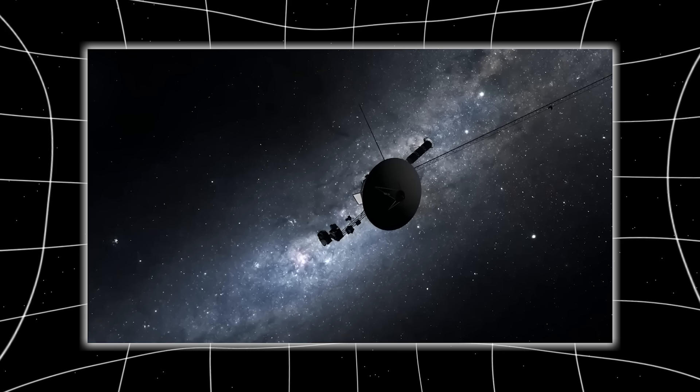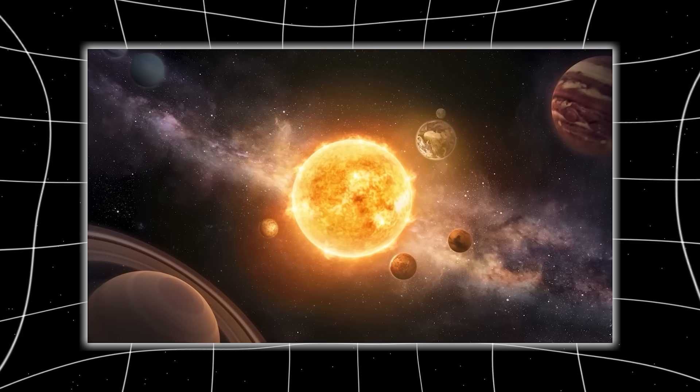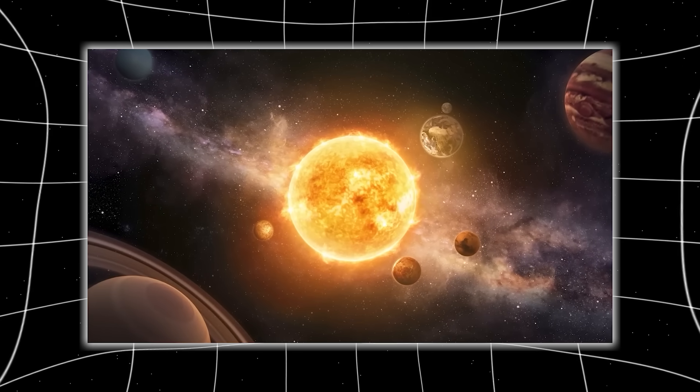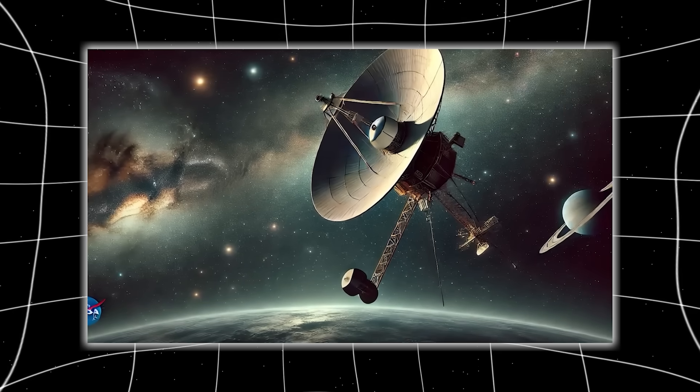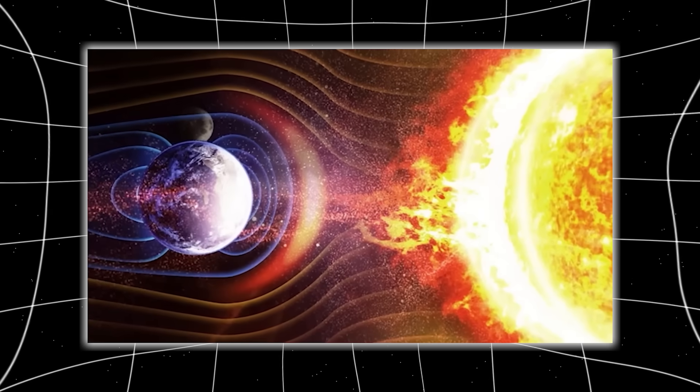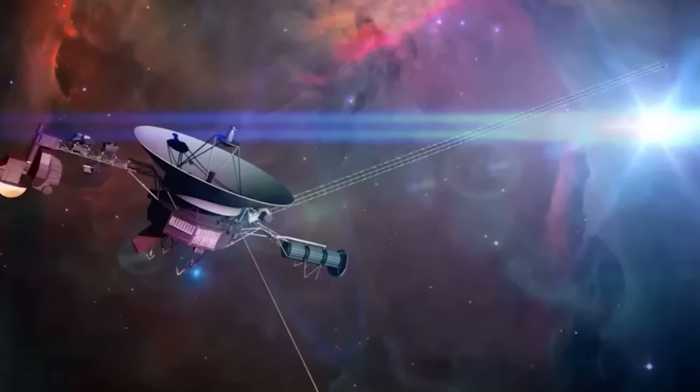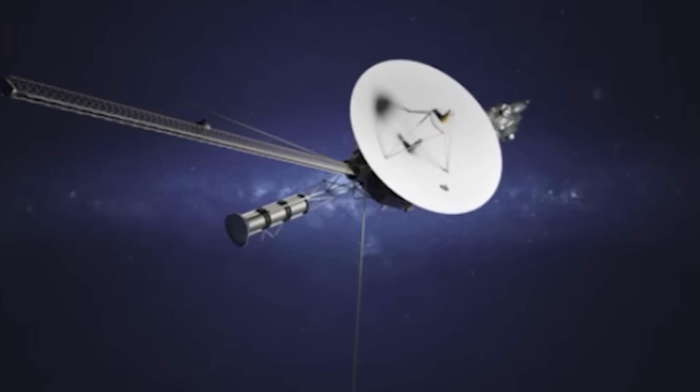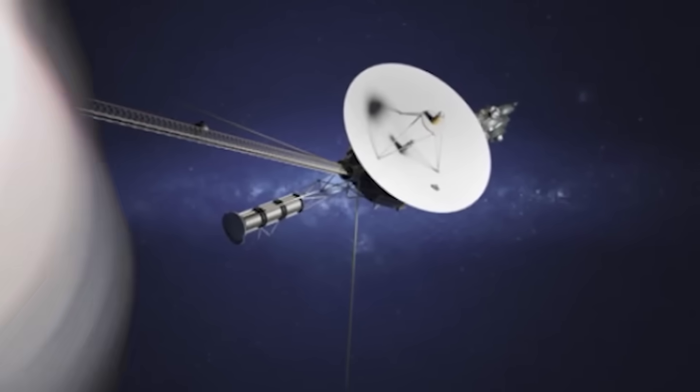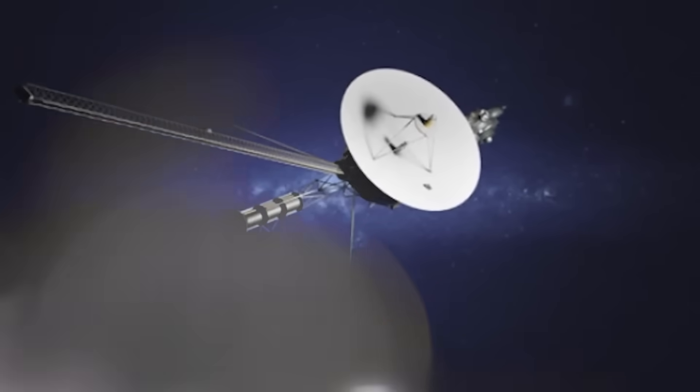This shattered every model we had. And while NASA tried to reconcile the data, something darker began to emerge. The readings suggested that the interstellar medium wasn't behaving like we expected. It was dense where it should have been sparse. It was calm where it should have been turbulent. And worst of all, the magnetic patterns looked eerily structured, as if shaped by something. Not random, something intentional.